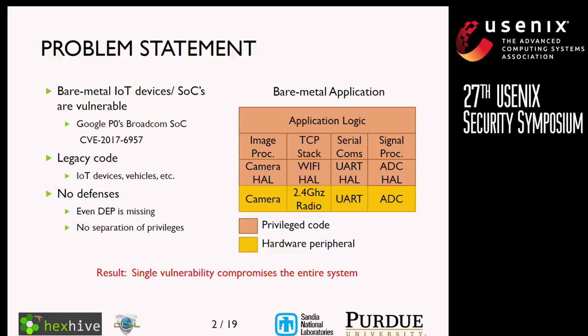Google's Project Zero demonstrated their vulnerability with CVE 2017-6957. In this CVE, they found memory corruption vulnerabilities in a Wi-Fi system on a chip that allowed them to compromise that chip. Just by having Wi-Fi on — without being connected to the access point — they were able to take over the application processor in cell phones. ACES applies to legacy code used in IoT devices, vehicles, and lots of embedded systems. These small microcontrollers are now connected and vulnerable. They often don't apply any defenses — even data execution prevention, standard for two decades, is not applied. There's no separation of privileges, so a single vulnerability can compromise the entire system.